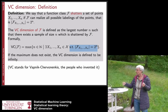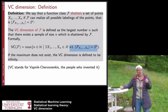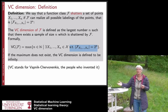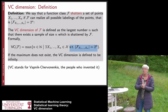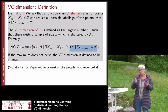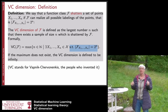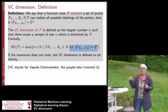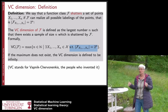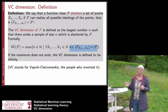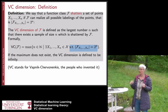The shattering coefficient depends on one particular sample size. The VC dimension gets rid of this dependency by looking at different sample sizes: as soon as we reach a sample size where we find one particular dataset that cannot be shattered anymore, that is where we stop and where we have found the VC dimension.